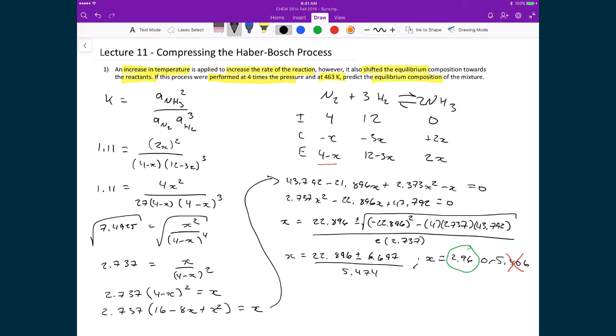And so ultimately what I'm going to get is a nitrogen pressure at equilibrium to be equal to 4 minus 2.96, which gives me a value of 1.04 bar.